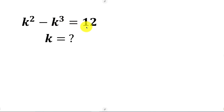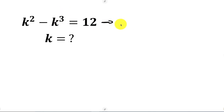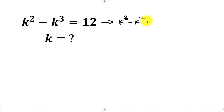Our first step will be to move all items on the left hand side to the right hand side. When this crosses to the right it becomes positive k cubed, and this becomes negative k squared. We already have 12 on the right, so that will be plus 12 equal to zero.